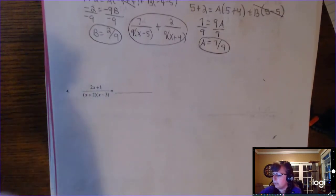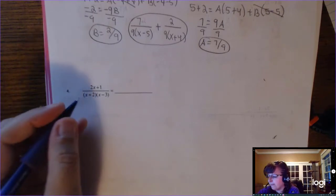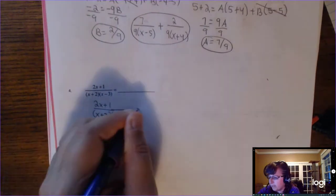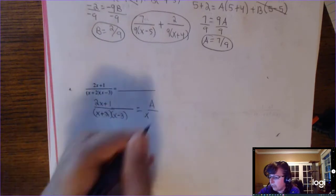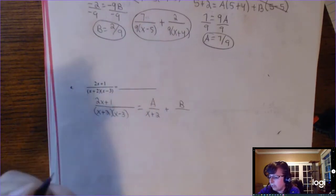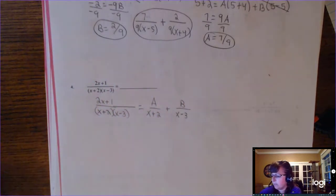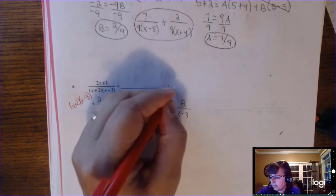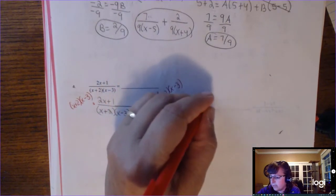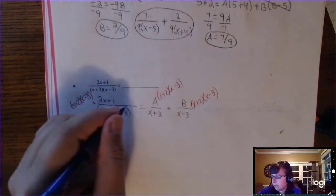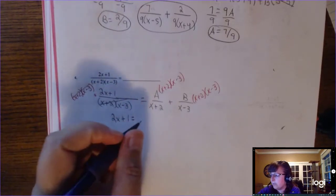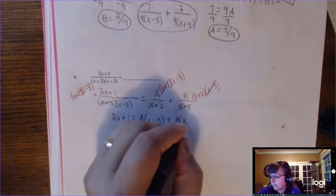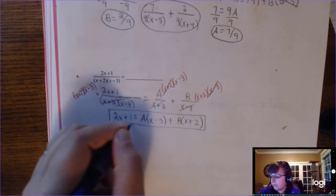The last one you might want to try yourself — it's already been factored. Pause the video and see if you can do it. Rewriting the left side, then A over x plus 2, plus B over x minus 3. Multiply both sides by x plus 2 times x minus 3, distributing to each term and canceling. You're left with 2x plus 1 equals A times x minus 3, plus B times x plus 2 — a nice equation without fractions.